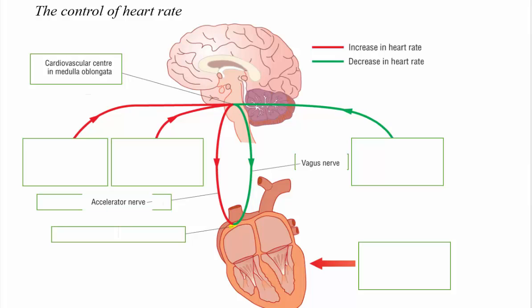The opposite of that is the accelerator nerve which is part of the sympathetic system which increases the heart rate.